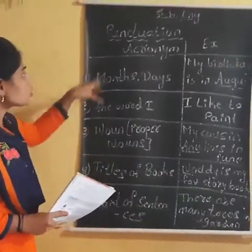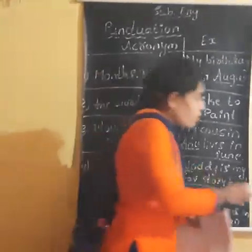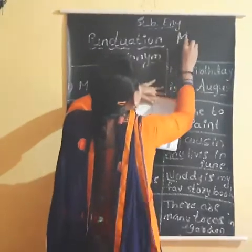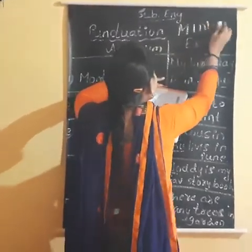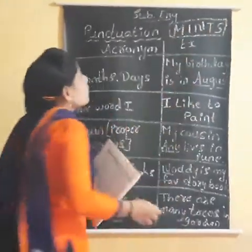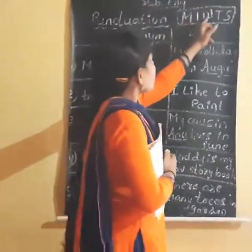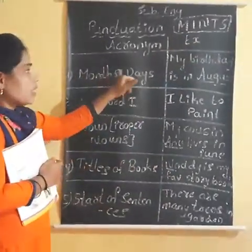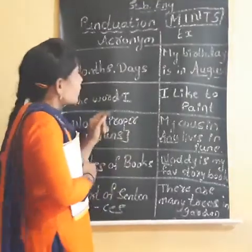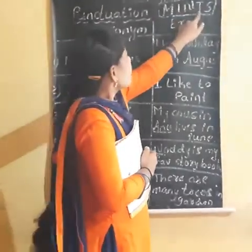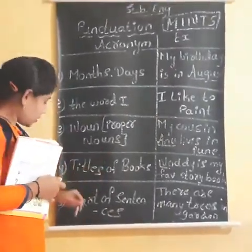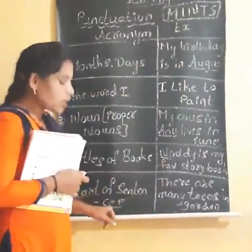To remember these rules, these are acronyms — the short form is MINTS: M-I-N-T-S. M means months and days. I means the word 'I'. N means proper nouns. T means titles of books or movies. S means starting of sentences.